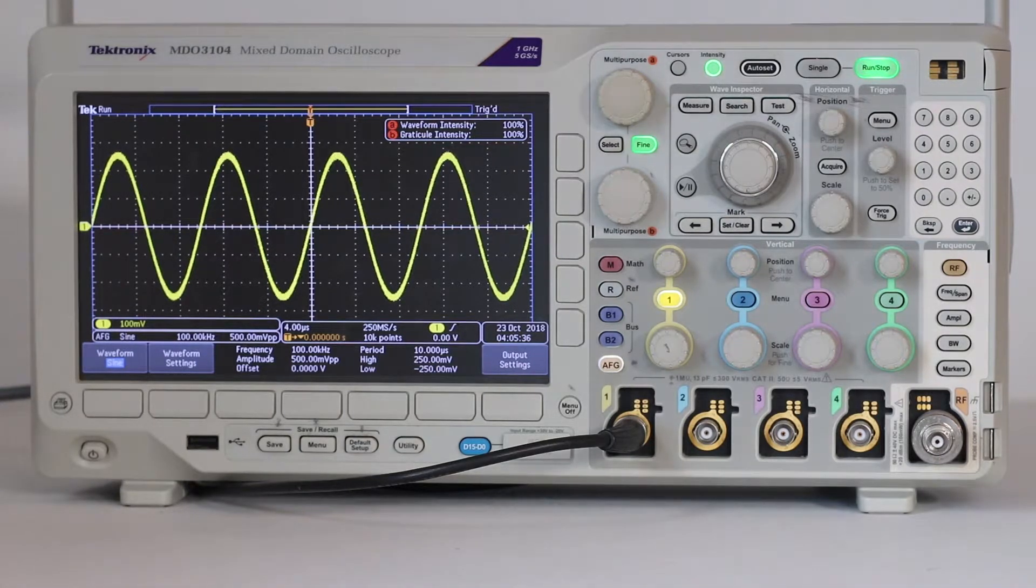To see why there are multiple vertical scale and position knobs but only one of each in the horizontal section, we have to understand the meaning of the word domain.